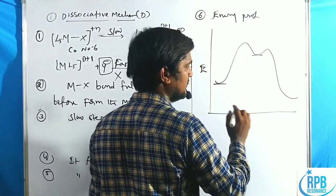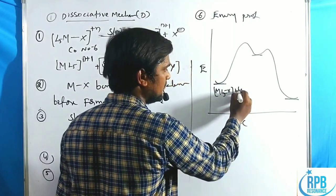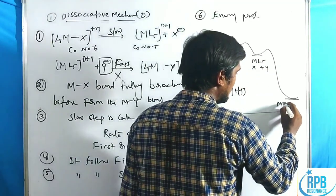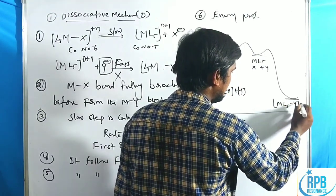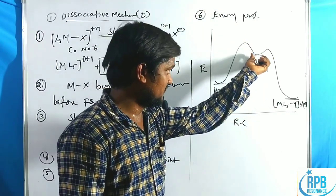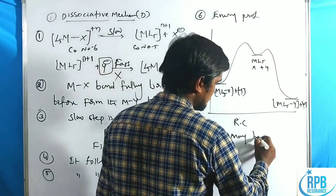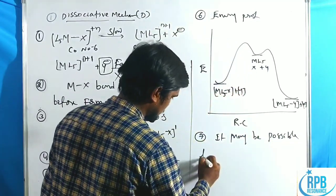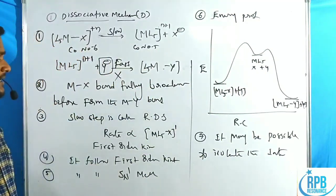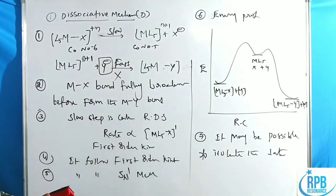In the energy profile diagram for the dissociative mechanism, the reactants are ML5X plus Y — three individual components; the intermediate is ML5 with coordination number 5; and the product is ML5Y plus X minus. It is possible to isolate the intermediate. These seven points — square pyramidal intermediate, full MX bond breaking before MY forms, slow first step, first-order kinetics, SN1 analogy, energy profile, and isolable intermediate — define the dissociative mechanism.